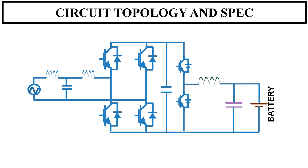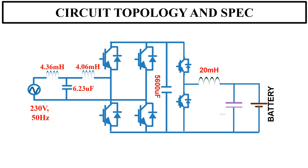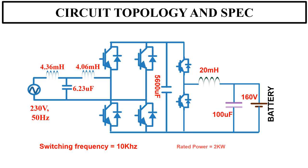Now I will give you the specification of the complete system. Grid voltage is 230 V RMS at 50 Hz. Filter values are 4.36 mH, 4.06 mH, and 6.23 µF. Value of bus capacitance is 5600 µF. Buck filter inductance is 20 mH, output capacitance is 100 µF, battery nominal voltage is 160 V. Switching frequency of both converters is 10 kHz. Rated power is 2 kW.